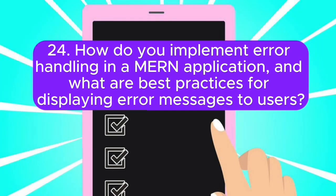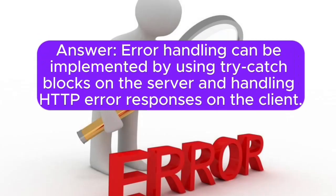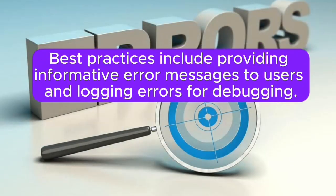24. How do you implement error handling in a MERN application, and what are best practices for displaying error messages to users? Answer: Error handling can be implemented by using try-catch blocks on the server and handling HTTP error responses on the client. Best practices include providing informative error messages to users and logging errors for debugging.